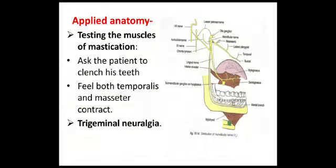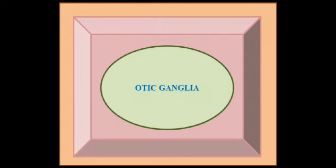Coming to the applied anatomy — first, we would like to test the muscles of mastication. We ask the patient to clench his teeth and simultaneously feel the temporalis and masseter of both sides to confirm they contract equally. Another important clinical condition is trigeminal neuralgia.